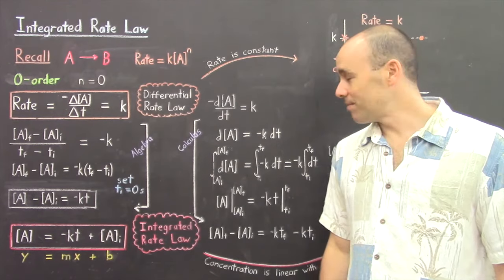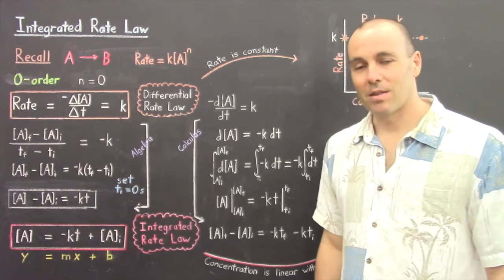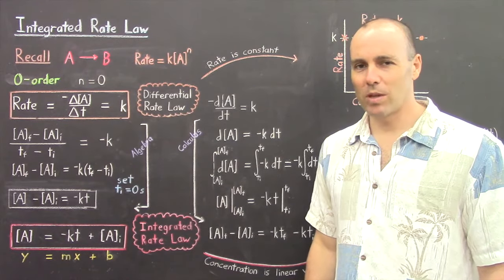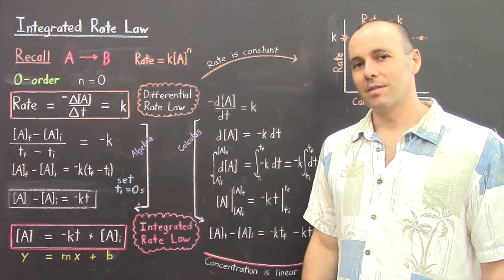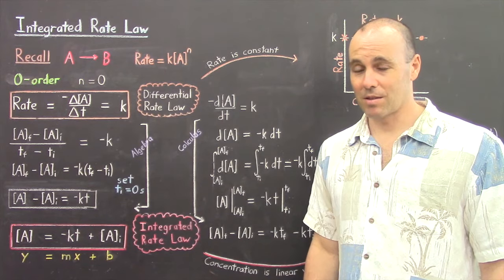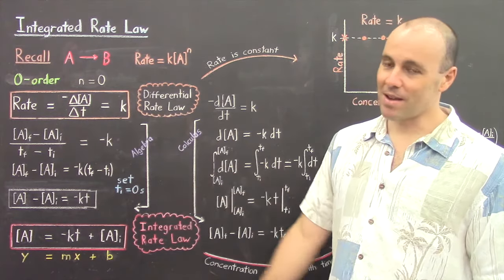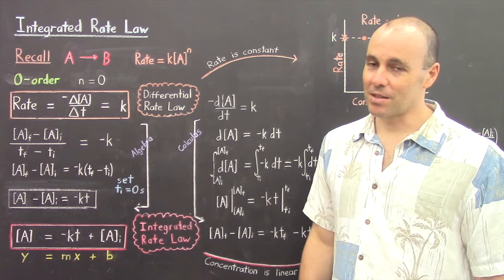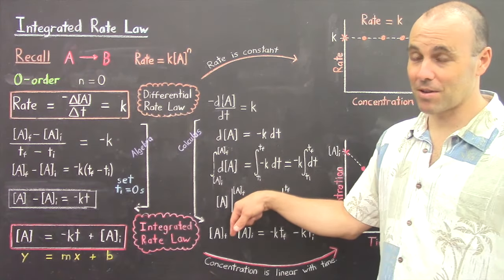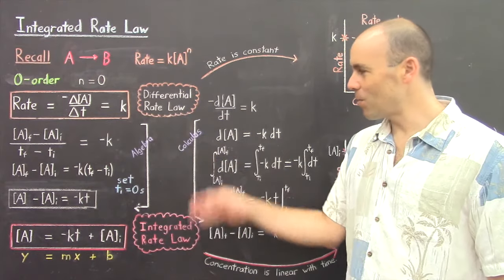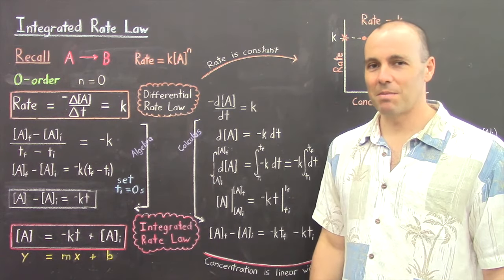You can use either derivation — they both work. When we get to first and second-order reactions, we'll see that it's a little bit more tricky to derive the integrated rate law using algebra; it's much easier to use calculus. But at this point for zero order, they're basically the same difficulty.